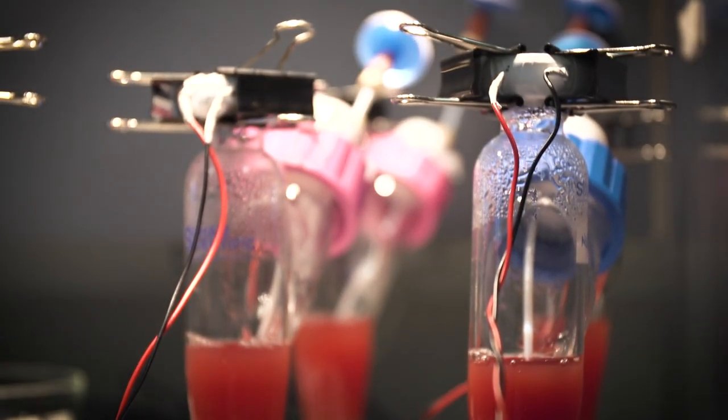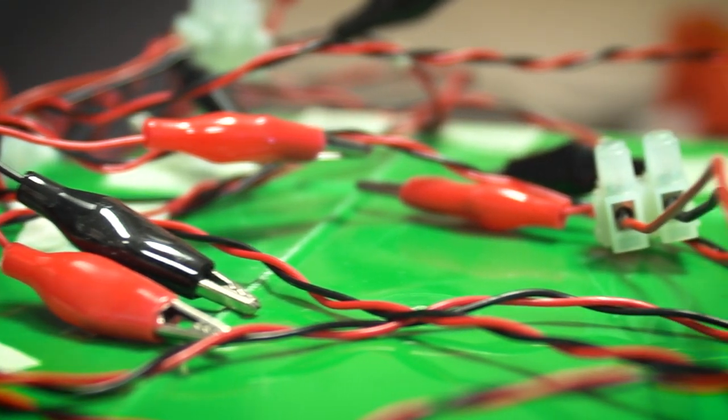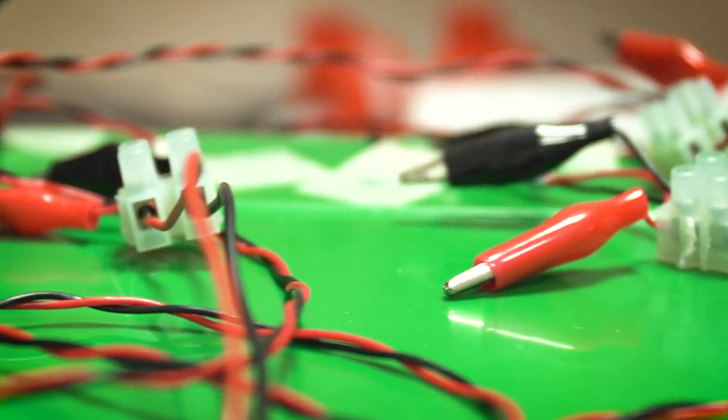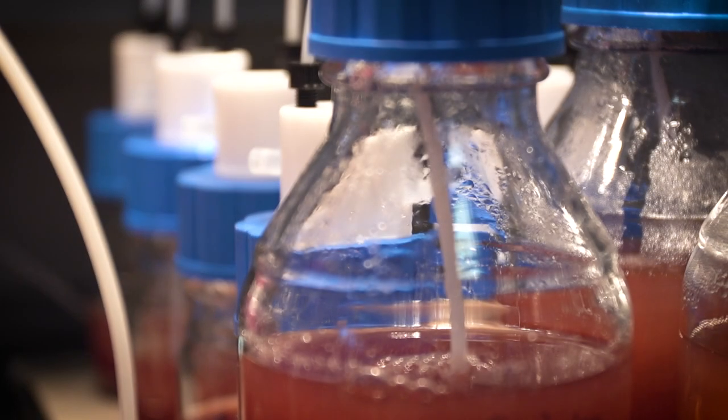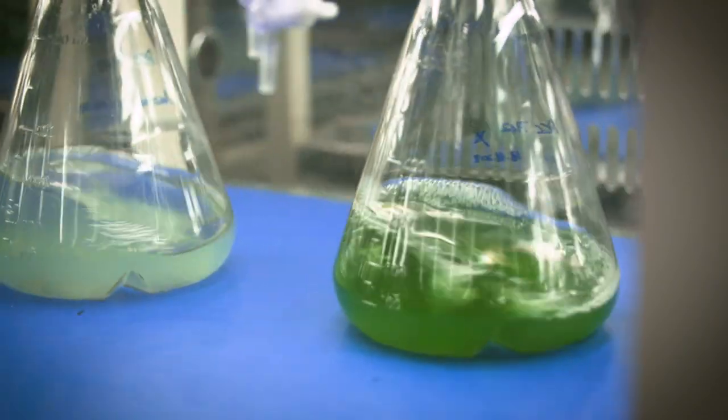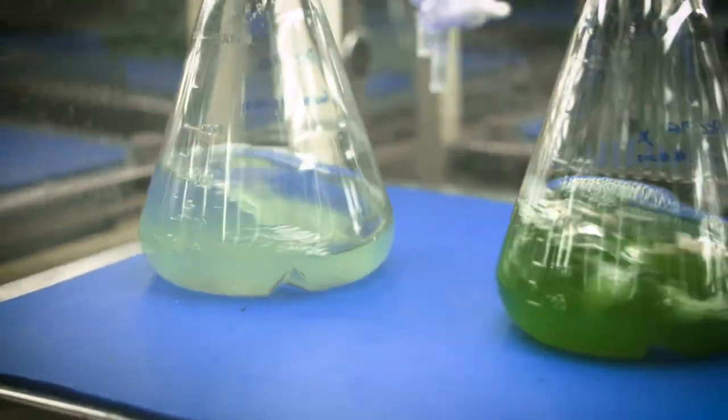To harvest solar energy, we are using a specific platform called bioelectrochemical systems. These convert light energy into electrical energy by using microorganisms as catalysts.